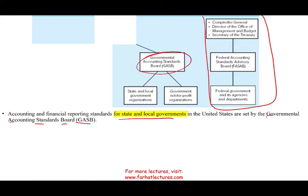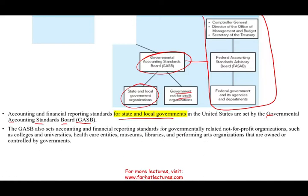GASB is basically the equivalent of FASAB for state and local government. GASB governs state and local government as well as governmental not-for-profit organizations — those owned or controlled by the government. For example, public colleges and universities like Westchester University, the Community College of Philadelphia, and Northampton Community College are under the government. Healthcare entities such as county hospitals, museums, libraries, and performing arts organizations owned or controlled by the government also follow GASB.